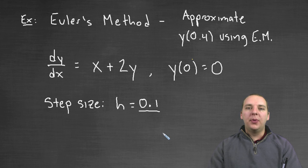In this example, we're being asked to approximate the y value for the solution of this differential equation when x is 0.4 using Euler's method.